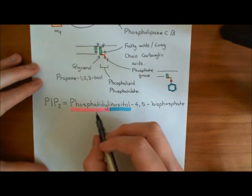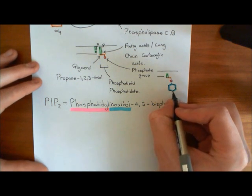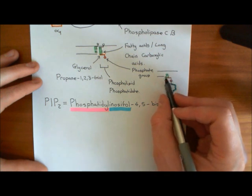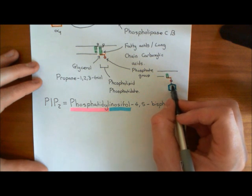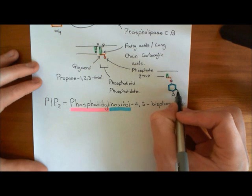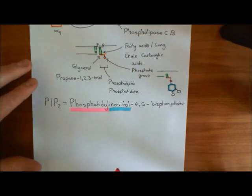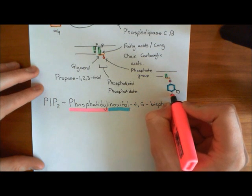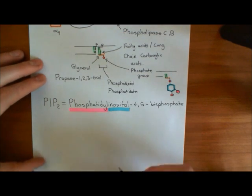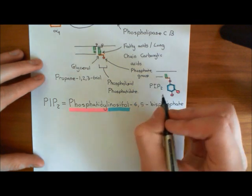We want PIP2, phosphatidyl inositol 4,5-bisphosphate, so you need to add phosphate groups on the fourth and the fifth carbon of inositol. The carbon bound to the phosphatidyl group is deemed the first carbon, then second, third, fourth — we stick off a phosphate group at the fourth — and then the fifth one is over here. I'm not sure why this molecule is called 4,5-bisphosphate rather than something else, but they label that carbon with the second phosphate group as the fifth carbon of PIP2. This is the structure of PIP2: phosphatidyl inositol 4,5-bisphosphate.